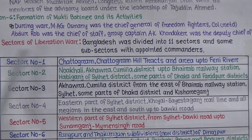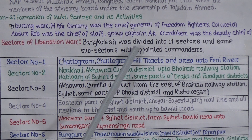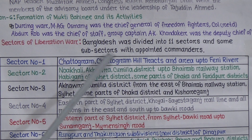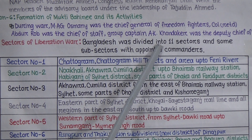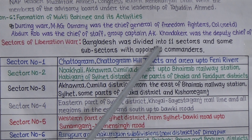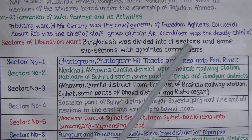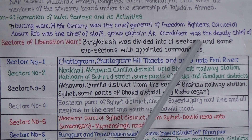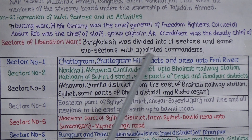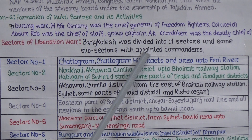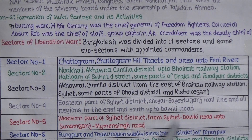The whole country was divided into 11 sectors and some sub-sectors with appointed commanders. For proper arrangement and management to fight with our enemies, Bangladesh was divided into 11 sectors. These sectors were further divided into sub-sectors, and commanders were appointed for each. Now let's learn about the 11 sectors and their areas.